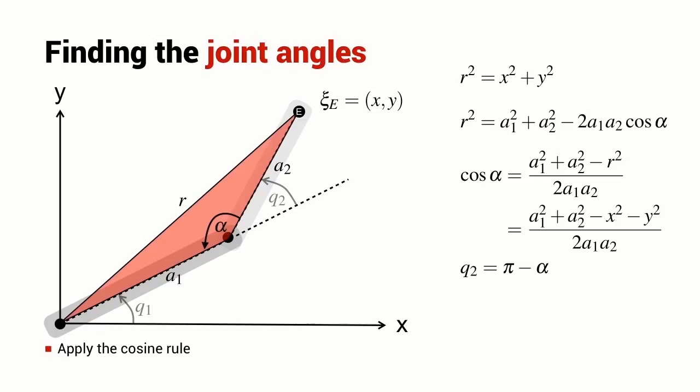We can write this simple relationship between the angles alpha and Q2 and we know from the shape of the cosine function that cos of Q2 must be equal to negative of cos alpha. This then lets us write an expression for the cosine of the joint angle Q2.